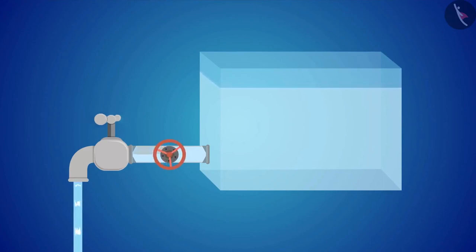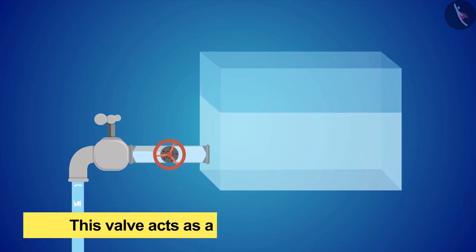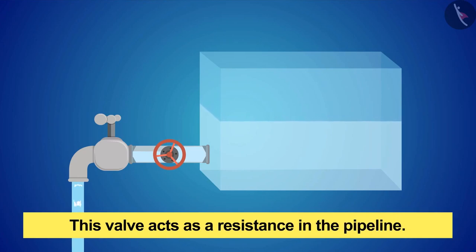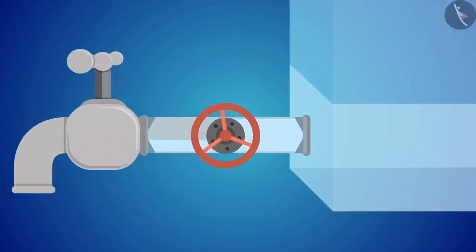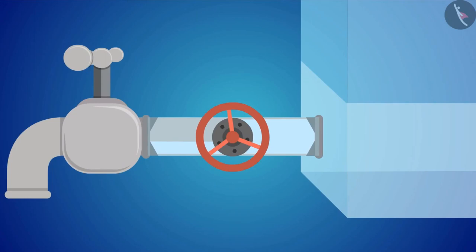If a valve is placed in a pipeline which controls the amount of water flowing towards the tap, then this valve acts as a resistance in the pipeline. Resistance literally means resisting anything. Here the one which resists is a resistor. Here this valve resists water and controls its flow.